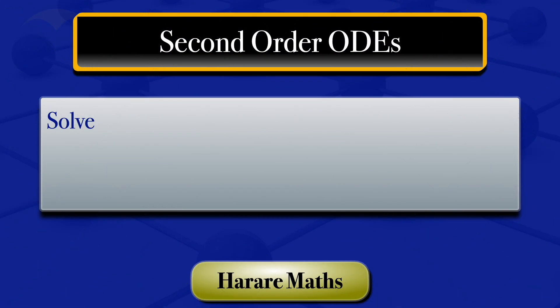In this video, I'm going to solve the non-homogeneous second-order ODE: y prime prime minus y prime minus 6y equals 4x squared.